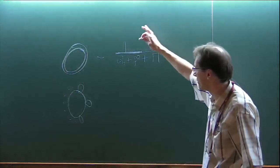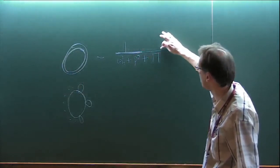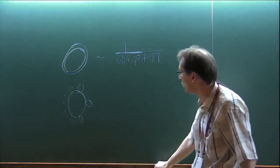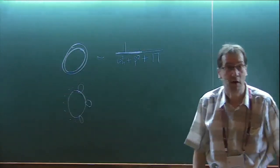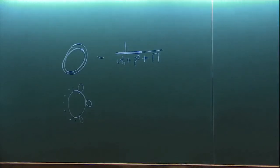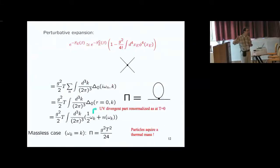Continuing the calculation — this was done by several people, in particular by Arnold and Zhai in 1994. Here is the expression for the pressure of scalar field theory. It starts with the ideal gas piece, factored out, and then you have corrections in various powers of the coupling.